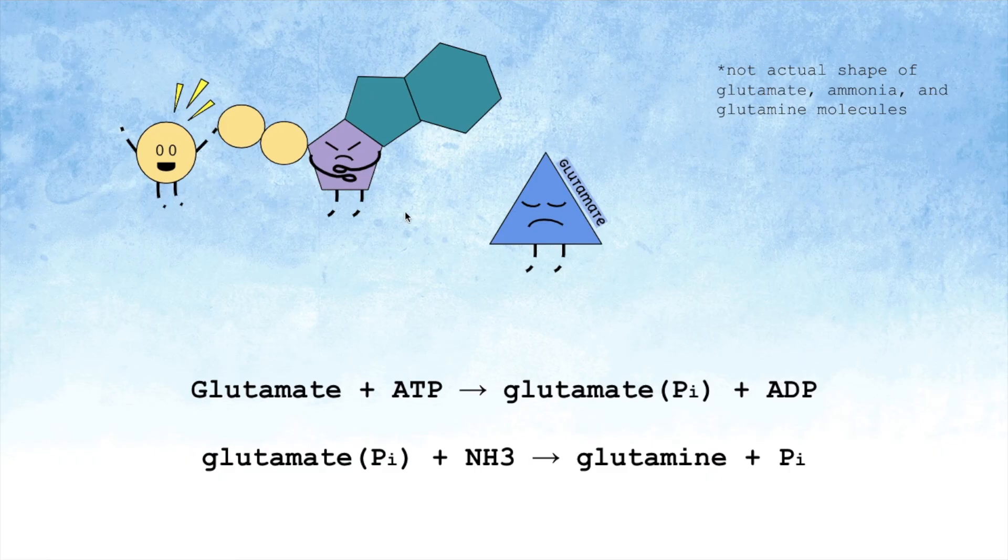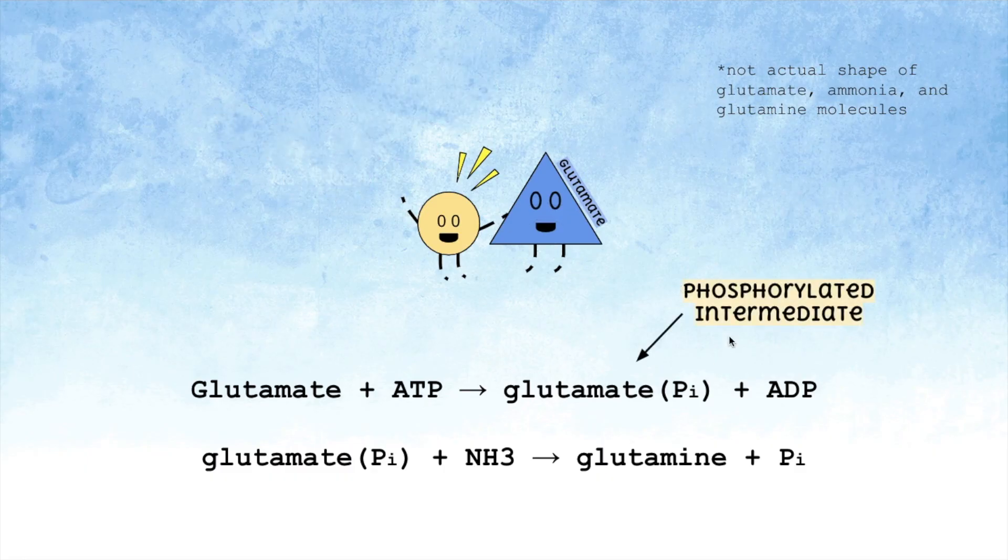ATP, tired of having to deal with its third phosphate, gives it to glutamate to cheer it up since it's sad that it doesn't have enough energy to react with ammonia. This forms a phosphorylated intermediate, which is a molecule that's more reactive than it was originally due to the added phosphate.